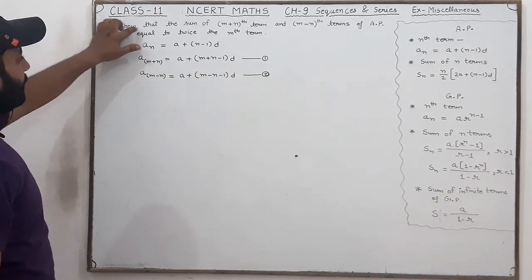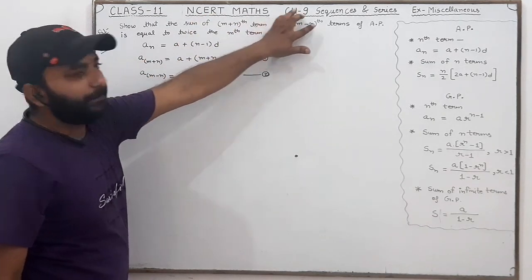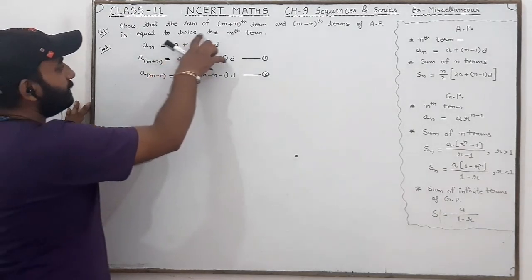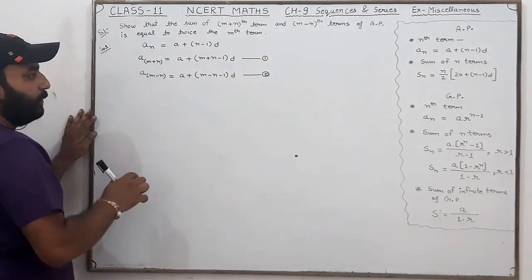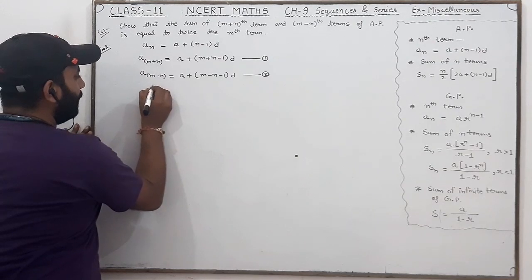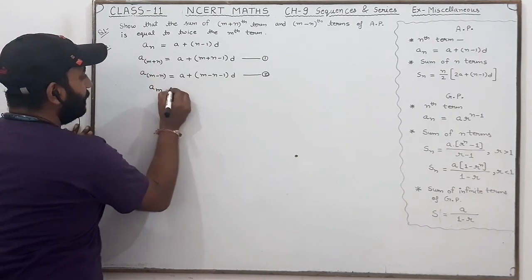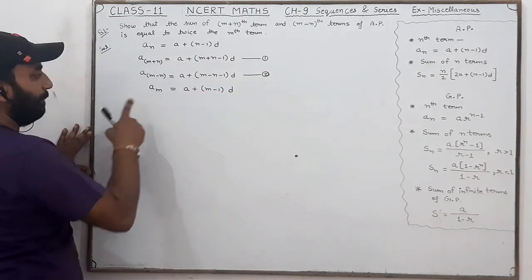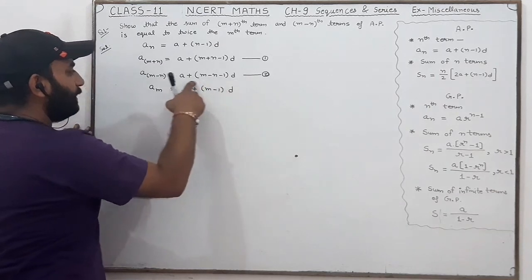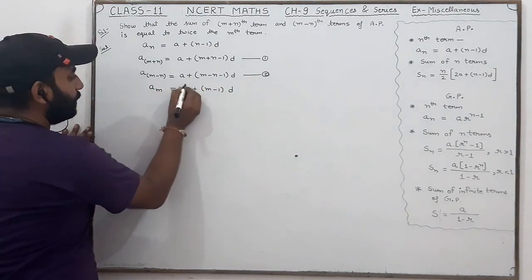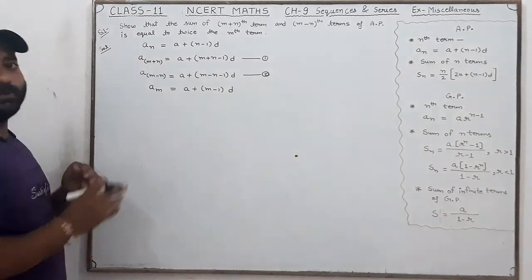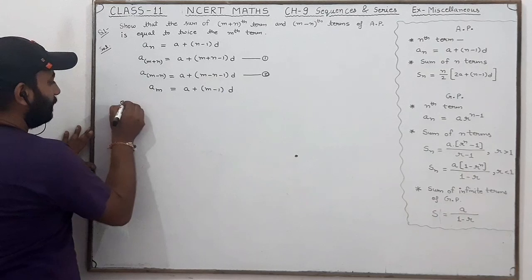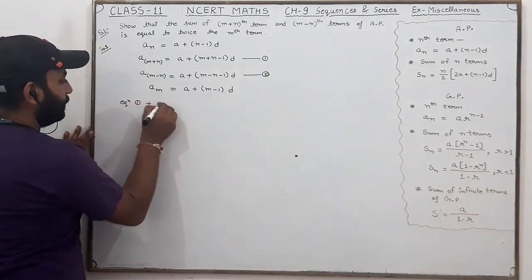We have to show that the sum of the (m+n)th and (m-n)th terms equals twice the mth term. The mth term is a_m = a + (m-1)d, so twice the mth term is 2[a + (m-1)d]. We will solve by doing equation one plus equation two.